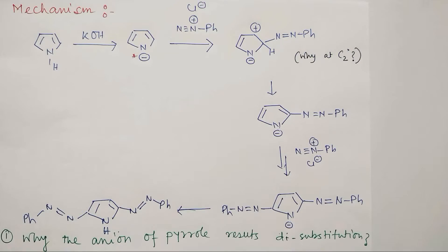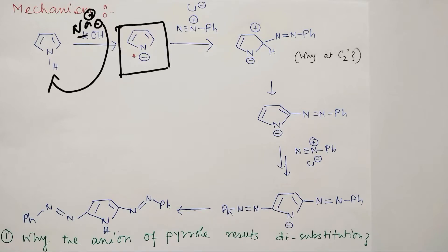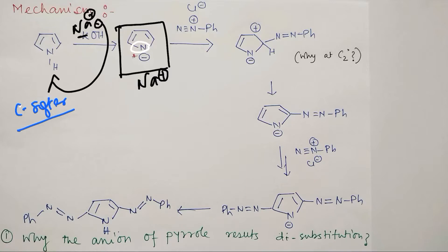Now let's discuss the mechanism. In the presence of base — sodium hydroxide — the hydroxide ion abstracts the proton from the NH and generates the pyrrole anion; the corresponding counter cation is sodium⁺. As discussed, after deprotonation it becomes more and more electron-rich. Now the question is: does the nitrogen center act as a nucleophile, or does the carbon part act as a nucleophile? Actually carbon acts as the nucleophile, because carbon is softer in nature, and nucleophilicity is associated with softness.